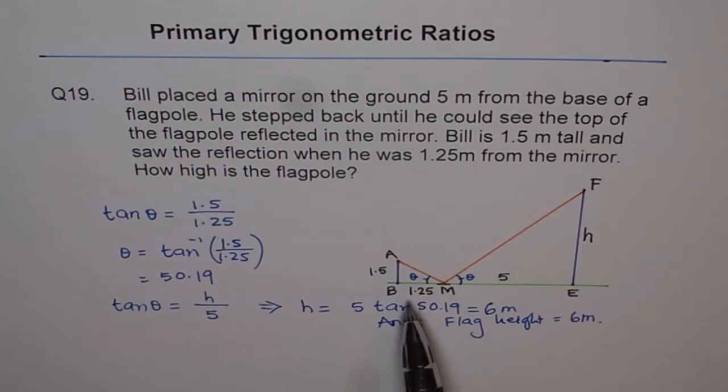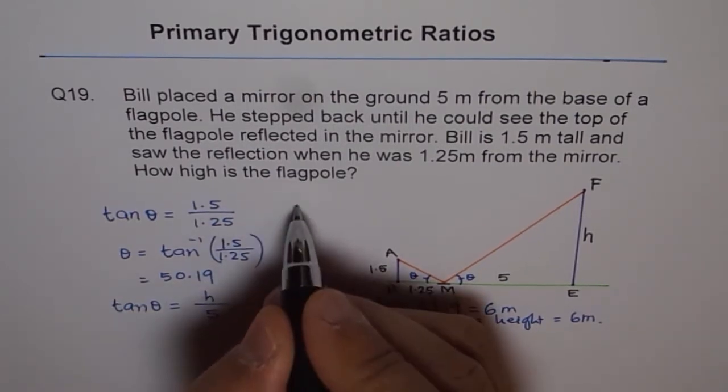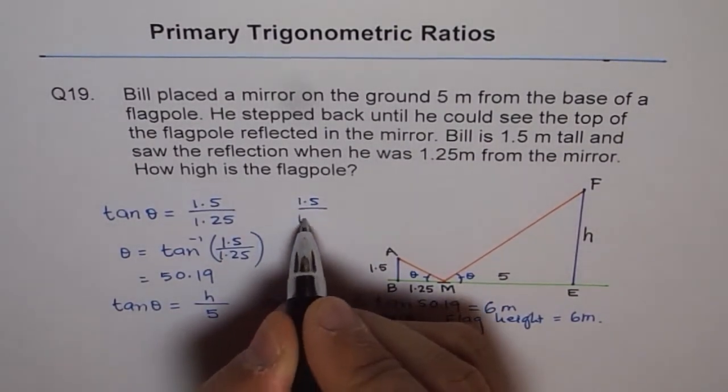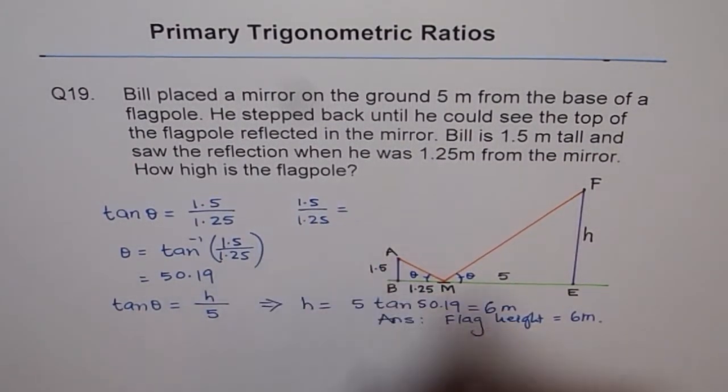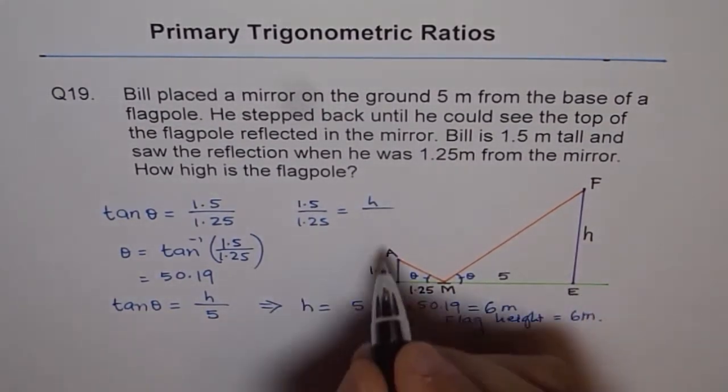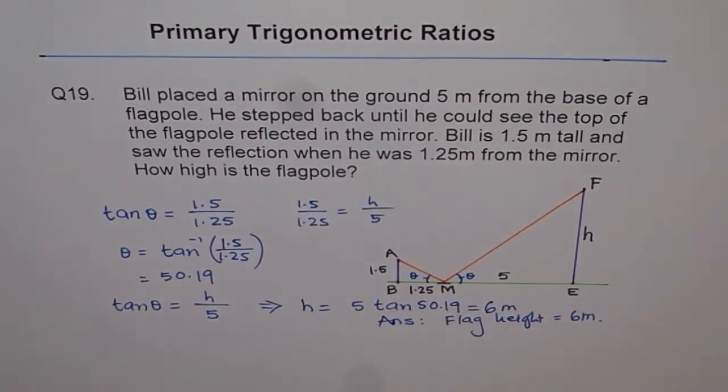This problem could be solved with ratios: 1.5 over 1.25 equals the unknown height over the known distance of 5, which gives us the same answer.